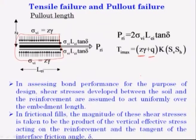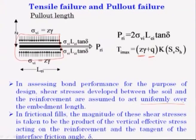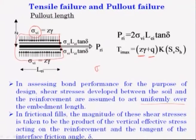In assessing bond performance for the purpose of design, shear stresses developed between the soil and the reinforcement are assumed to act uniformly over the embedment length. In frictional fields, the magnitude of these shear stresses is taken to be the product of vertical effective stress sigma_VI and the tangent of the interface friction angle delta.